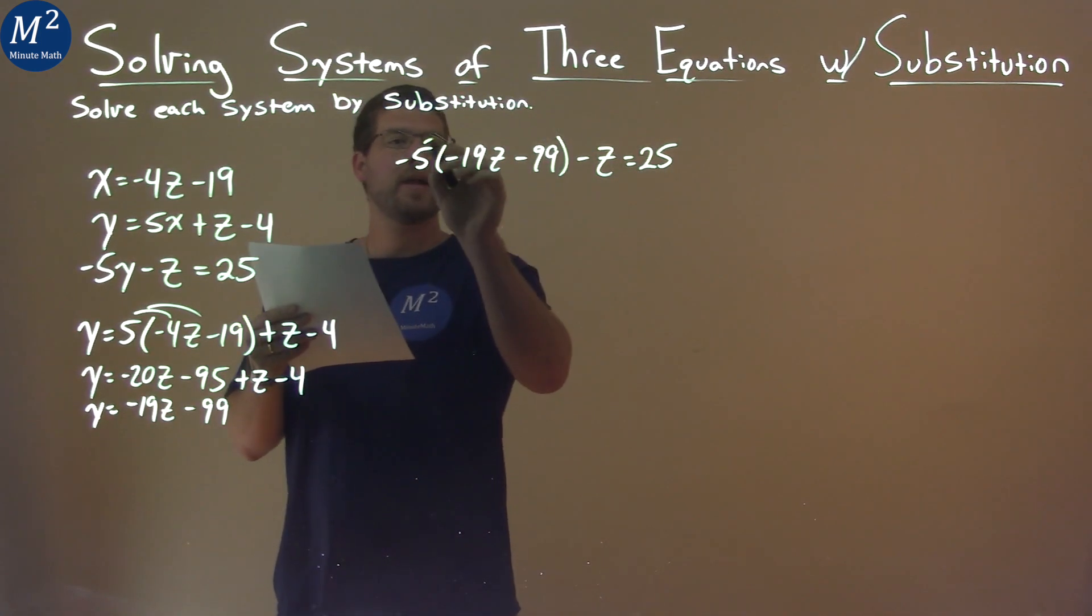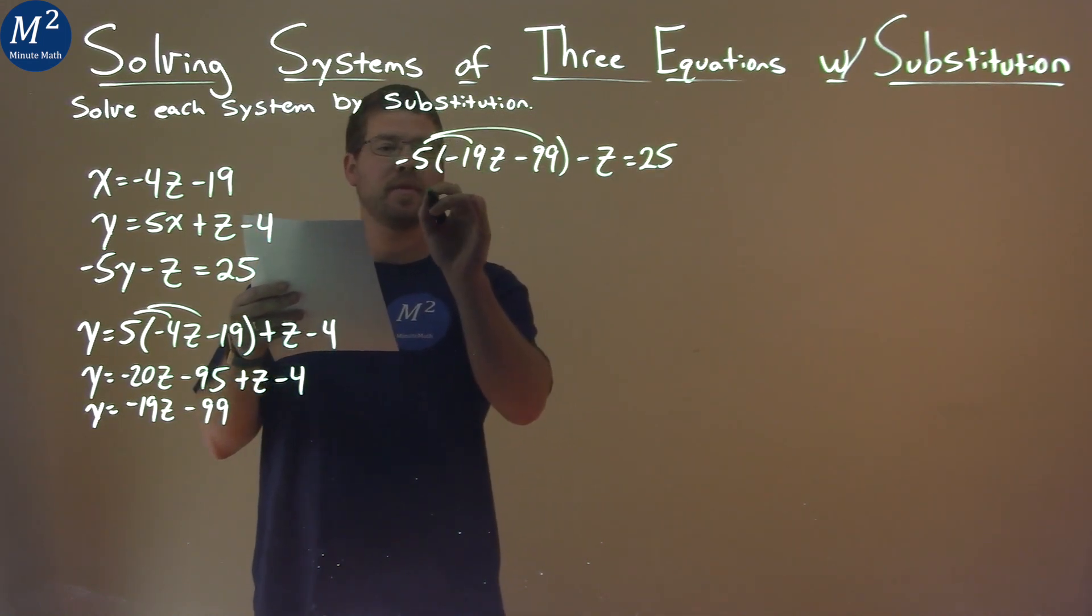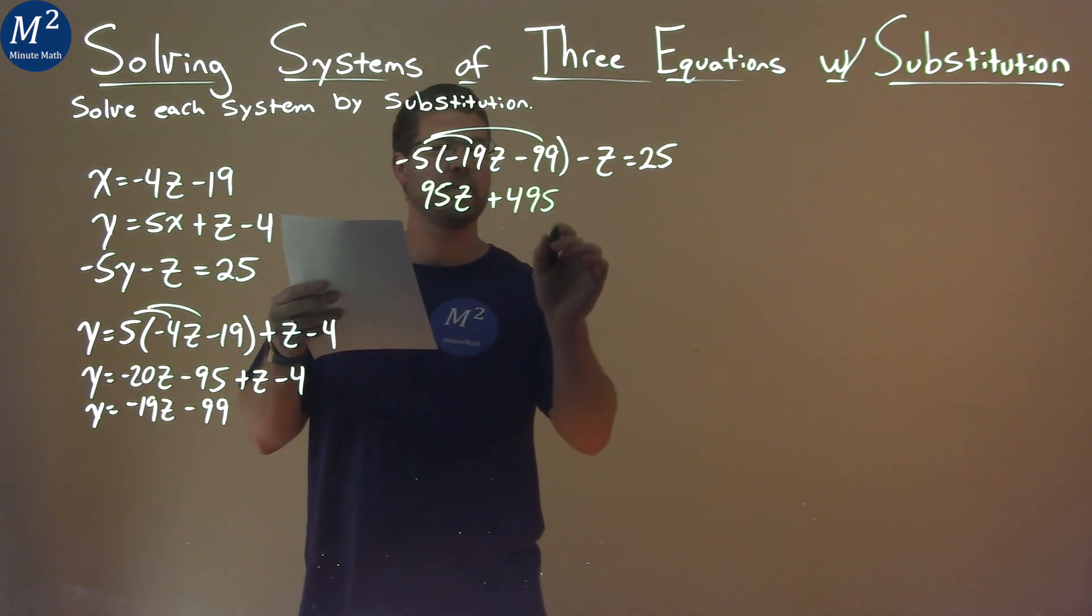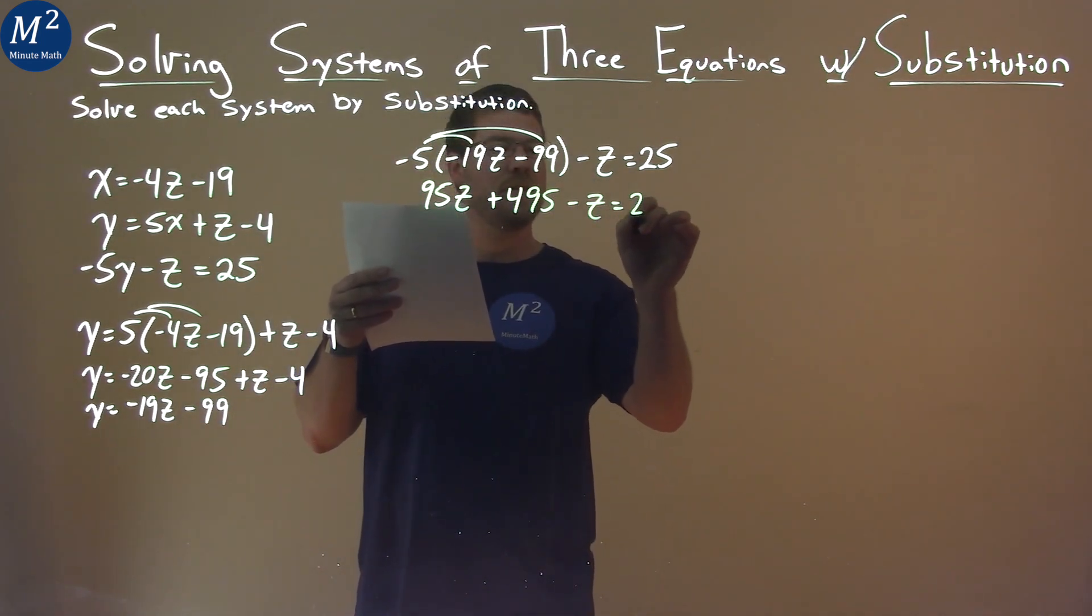So we'll distribute the negative 5 to both parts. Negative 5 times negative 19z is 95z. Negative 5 times negative 99 is positive 495. And then we just have a minus z here, and that's equal to 25.